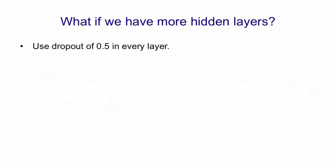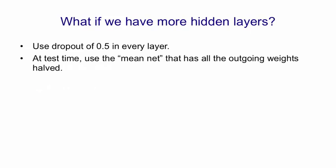If we have more than one hidden layer, we can simply use dropout of 0.5 in every layer. At test time, we halve the outgoing weights of all the hidden units, and that gives us what I call the mean net. So we use a net that has all of the units, but the weights are halved.